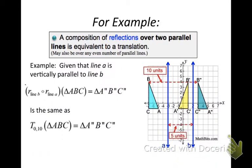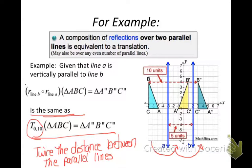So here's a couple that you should be familiar with. A composition of reflections over two parallel lines is going to be equivalent to a translation. So if I have these two lines, line A and line B, and I first reflect my triangle over line A, and then I reflect that same triangle over line B, that is exactly the same thing as doing a translation of that triangle twice the distance between the parallel lines. So I have five units between the parallel lines. And when I reflected the triangle twice, it's the same thing as translating that triangle 10 units to the right. So make sure you put that in your notes.